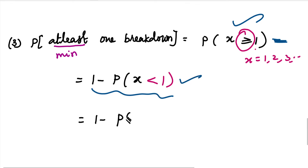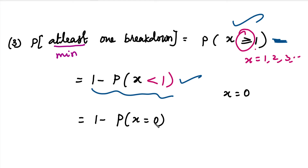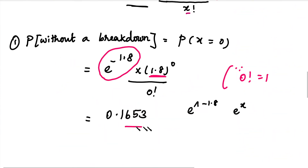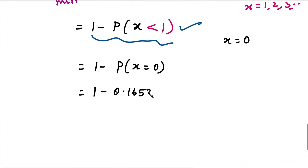This equals 1 minus P(X < 1), which means X = 0. So P(X ≥ 1) = 1 minus P(X = 0). We already found P(X = 0) in the first part — that value is 0.1653. Therefore, 1 minus 0.1653 gives us 0.8347.